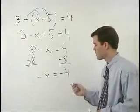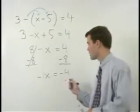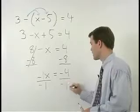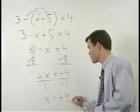Negative x can be thought of as negative 1x, so we divide both sides of the equation by negative 1 to get x by itself, and x equals positive 4.